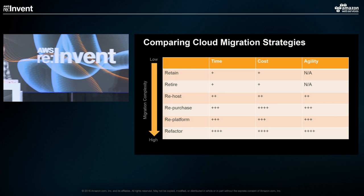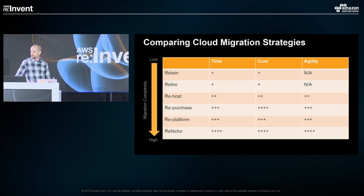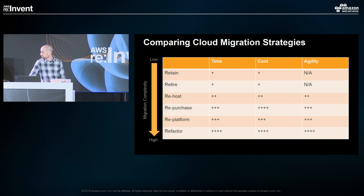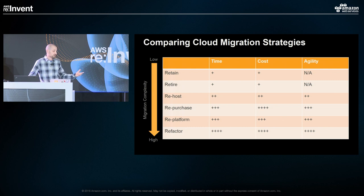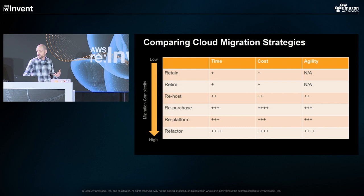Three things to think about as you go through your migration journey where tools come into play: time, cost, and agility. In the re-host or lift-and-shift model, you'll get into the cloud relatively quickly, but you'll still need to solve operational challenges — how do you make that thing scale? As opposed to refactoring, which takes significantly more time to redo your application, perhaps containerizing it or making it a microservice — but once inside AWS, the agility is just endless. You can take advantage of all the great AWS services and your customers will benefit.